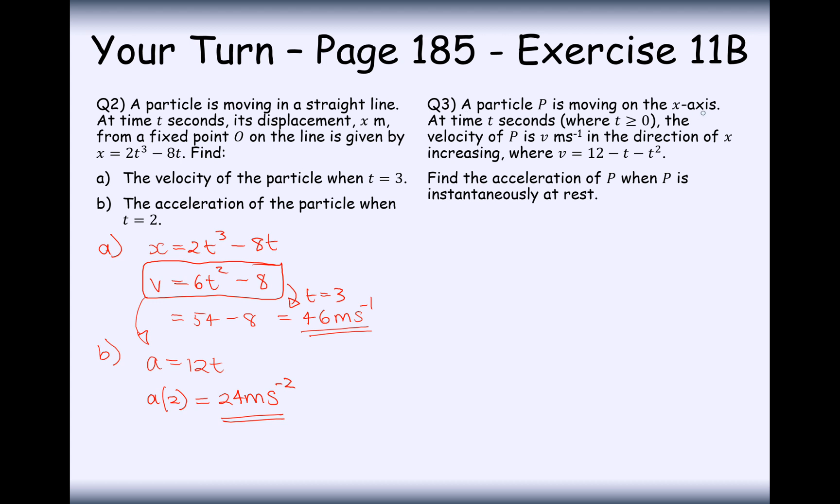Question 3. Particle P is moving along the x-axis. T is greater than 0. The velocity is represented by this expression here. Find the acceleration of P when P is instantaneously at rest. So two parts to this one here. When P is instantaneously at rest means v needs to equal 0. So we're going to get 0 equals t squared plus t minus 12. Now I've just switched all this around and moved it to the other side. So we're going to factorize and we're going to get t plus 4, t minus 3, which means we only get one solution here which is t equals 3 given that t is greater than 0.